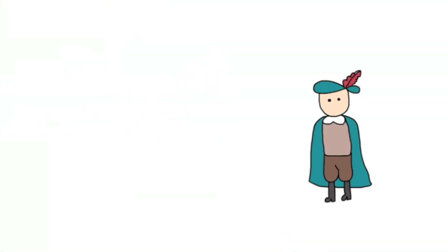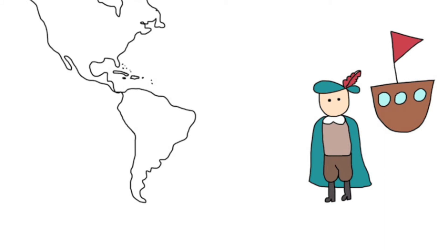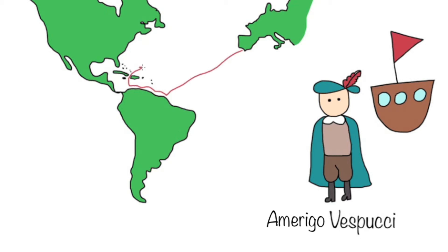Amerigo Vespucci, like Columbus, was an Italian explorer. In 1499 he took part in an expedition that led to the exploration of the northern coast of South America, and in 1501 another expedition led him south along the coast of what is now Brazil. It was during this voyage that Vespucci realized that the lands he was exploring were part of a continent unknown to the rest of the world.